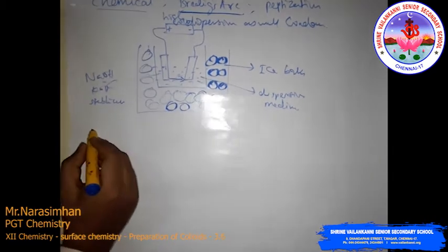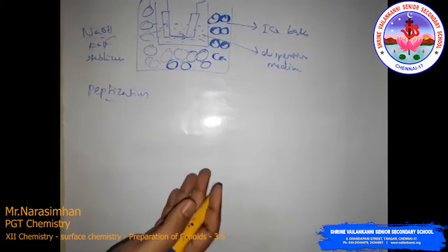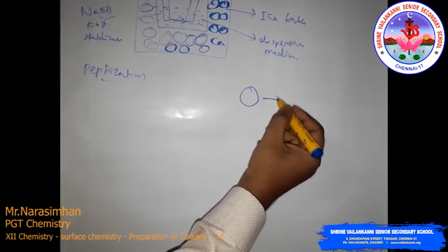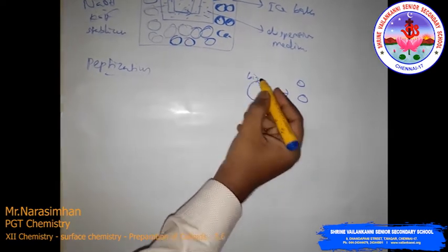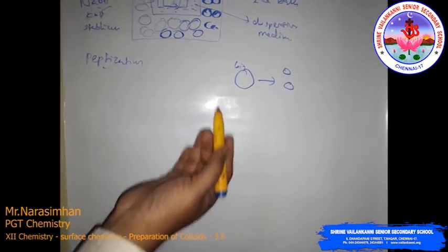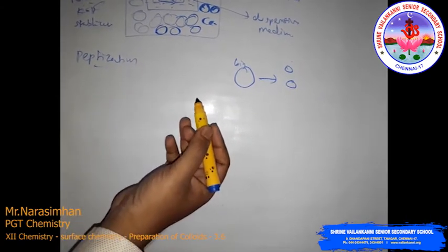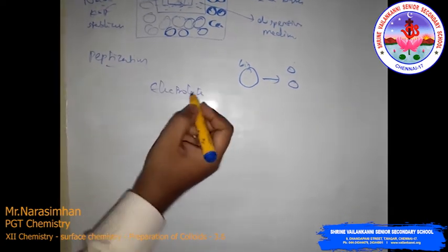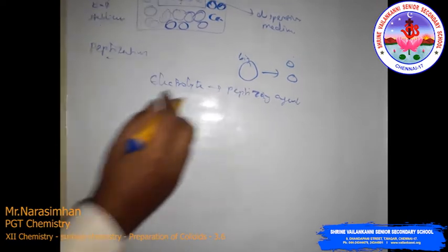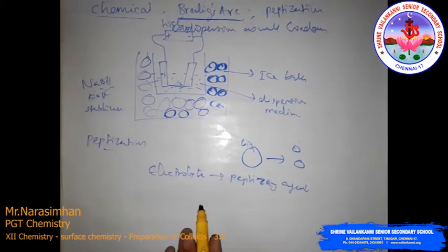The last method is peptization. Peptization is a process of converting a precipitate into a colloidal sol. The bigger particles are broken into smaller particles by shaking with a dispersion medium in the presence of a small amount of electrolyte called a peptizing agent. This method is applied to convert freshly prepared precipitates into colloidal sols.